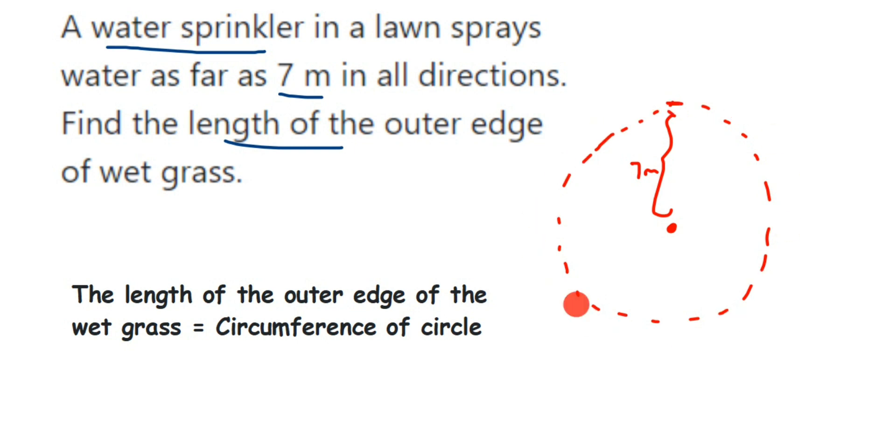So here I have written: the length of the outer edge is nothing but the circumference of the circle. And we know the radius is 7 meters, we have to find out C.